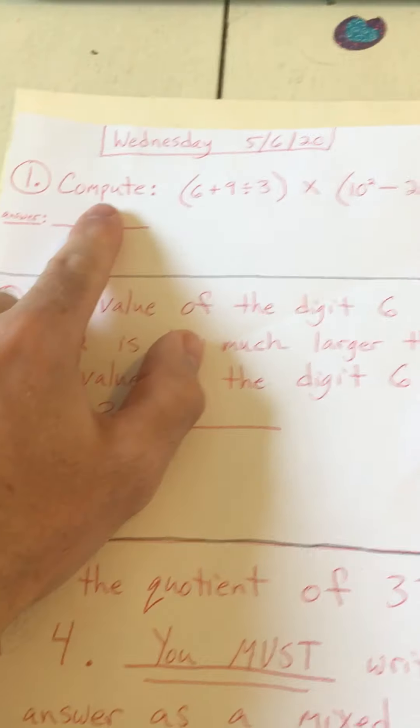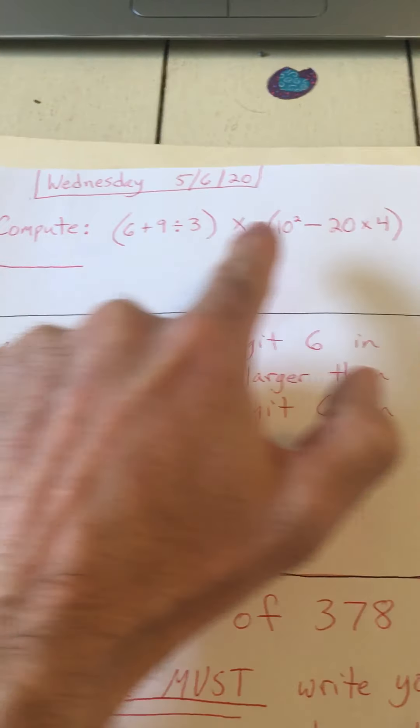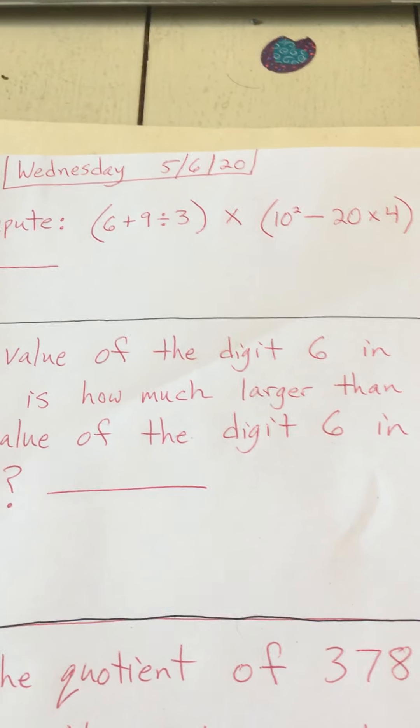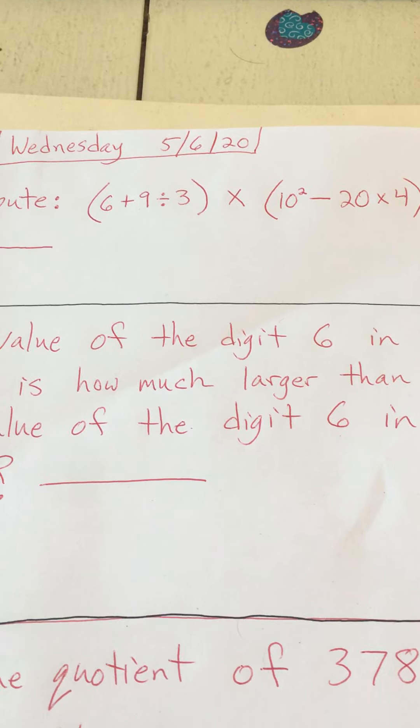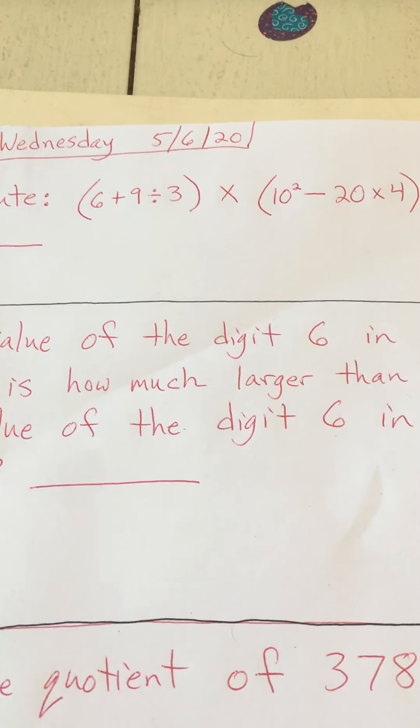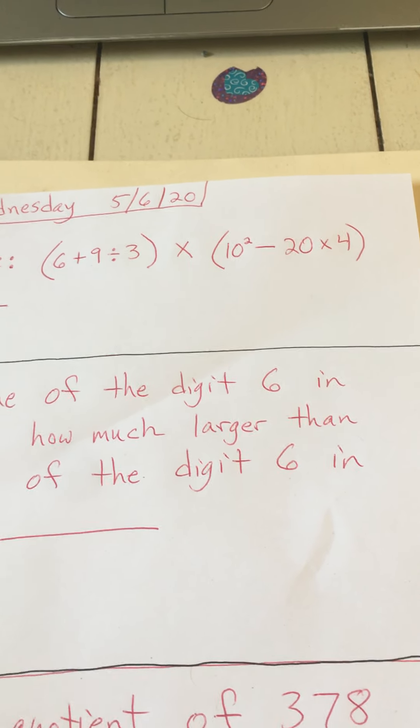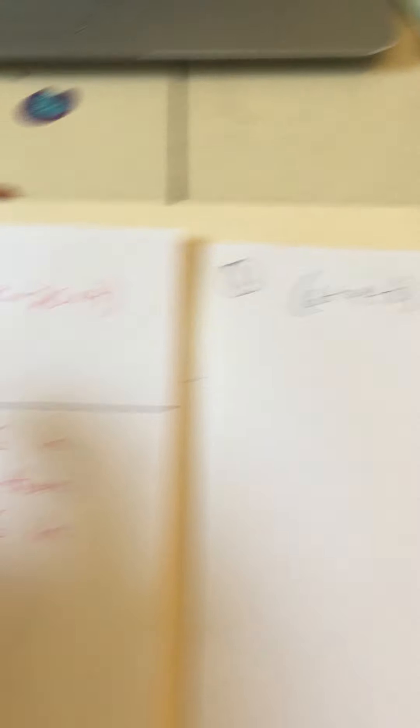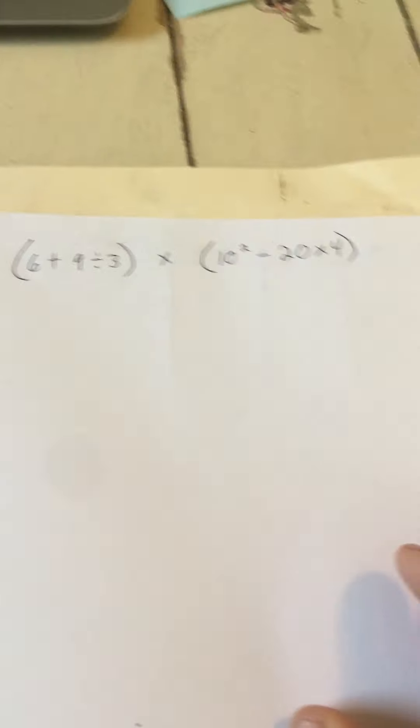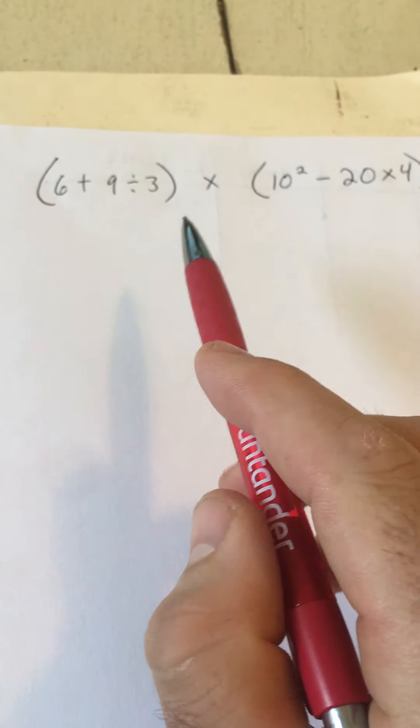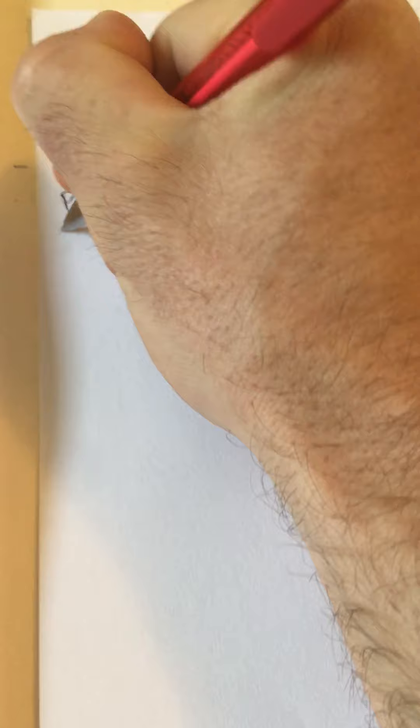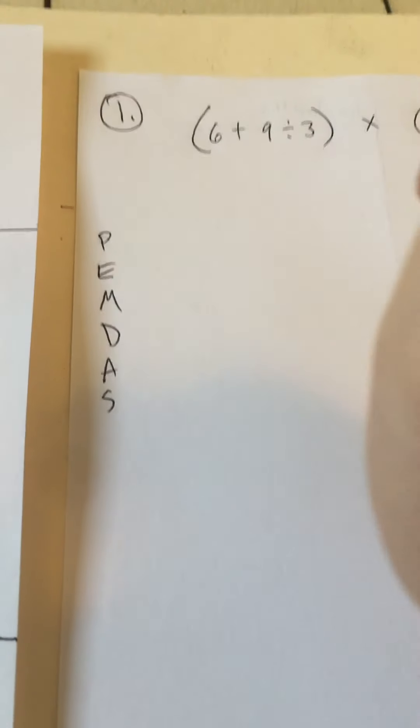So we are computing. Don't be tricked by that word. We're just going to solve this problem. There's two parentheses. It says (6 + 9 ÷ 3) × 10² minus 20 × 4. So this is an order of operations problem. I just rewrote it over here very carefully to make sure that I had all the correct digits and all the correct numbers and symbols. So the order of operations, we've learned this, and we've learned PEMDAS.